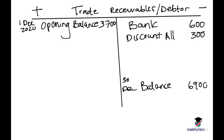We do not add cash sales into this account because they are cash sales, not credit sales. We only add sales that have been made on credit. Now we close off the account.